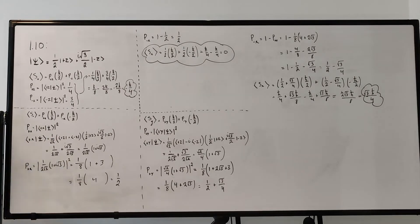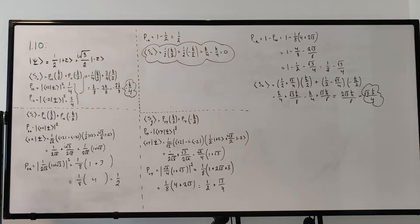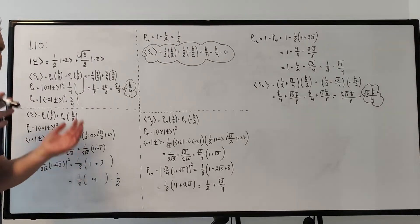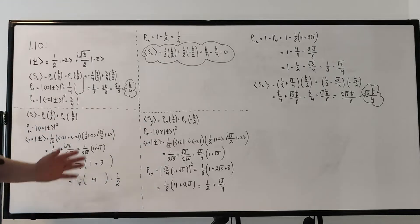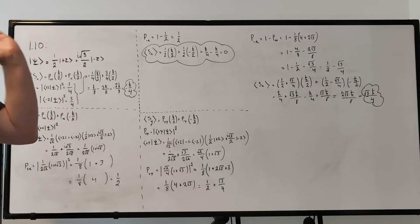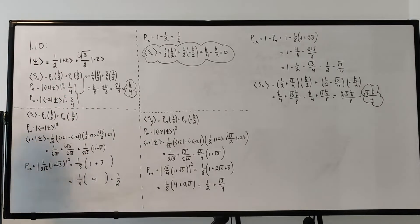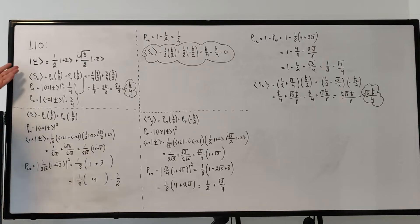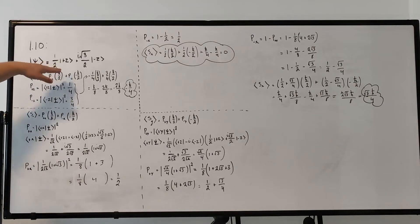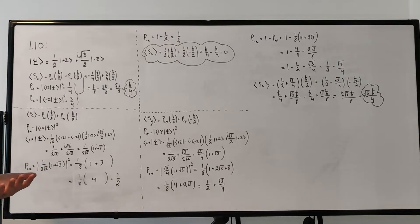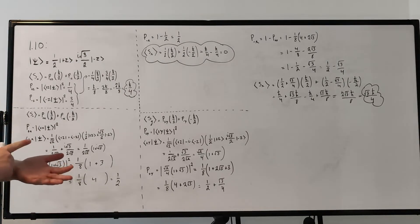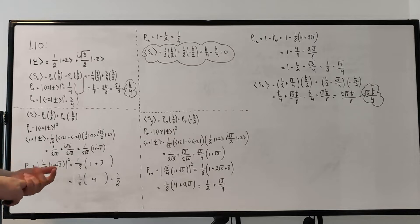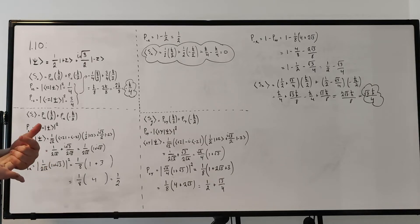What this problem is asking us to do is: we have a particle in state psi, which is not aligned on any direction — it's aligned on some n-axis. It gives us that state, which is 1/2 |+z⟩ plus i√3/2 |−z⟩, and it asks us to find the expectation value of the z, x, and y components of spin, respectively.